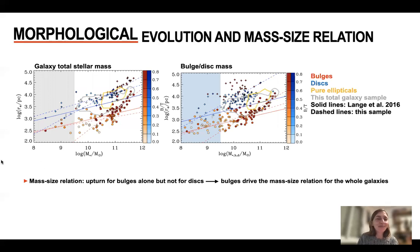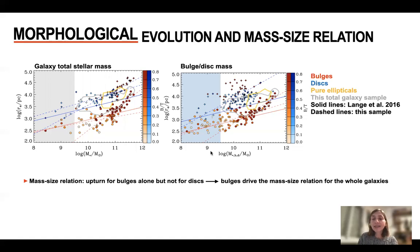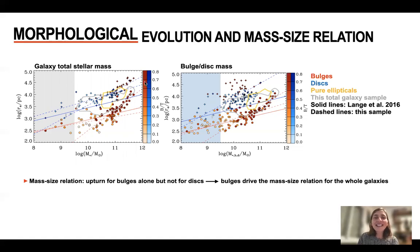Mass-size relation: we have size on the y-axis and mass on the x-axis. For the left-hand side panel, this is the galaxy total stellar mass; and for the right-hand side panel, bulge or disk mass. Gray data points correspond to the bulges, and blue data points correspond to the disks.